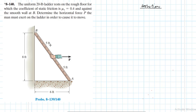We have a ladder that weighs 20 pounds resting on the rough floor. By rough, the problem implies there is friction between the ladder and the floor at point A, so we expect some friction force at A. We are also told the ladder rests on the smooth wall at B, meaning there is no friction at B — only where the ladder rests on the floor at A is there friction.